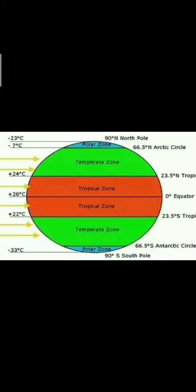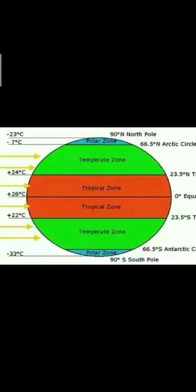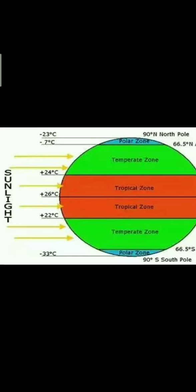See in this figure — three zones are given: the torrid zone (also called the tropical zone), the temperate zone, and the frigid zone. The red one is the torrid or tropical zone. From the left, you can see 'sunlight' written — sun rays are falling directly on the torrid zone, so direct rays of the sun fall there and it will be very hot.